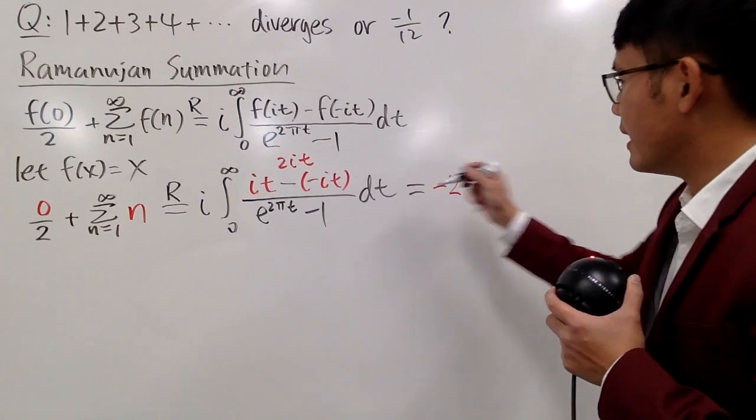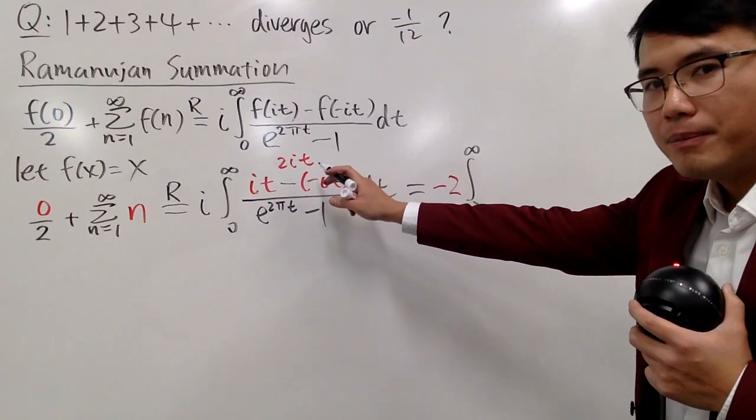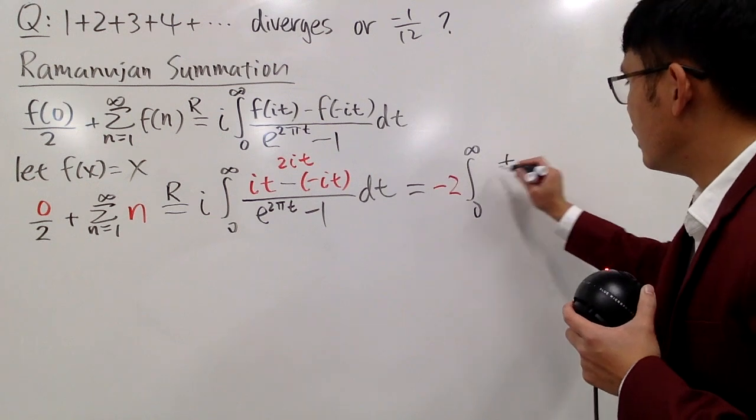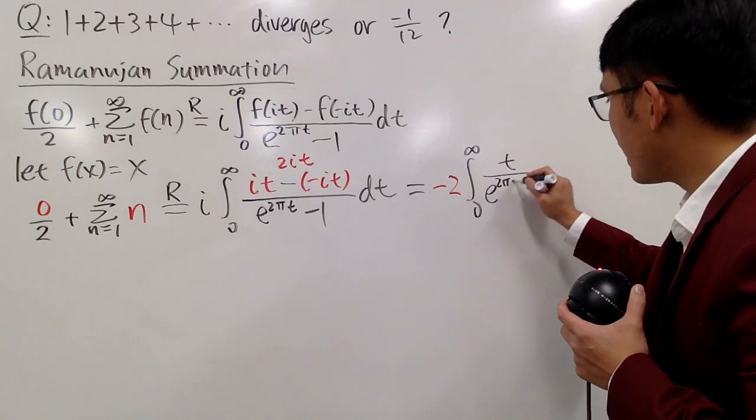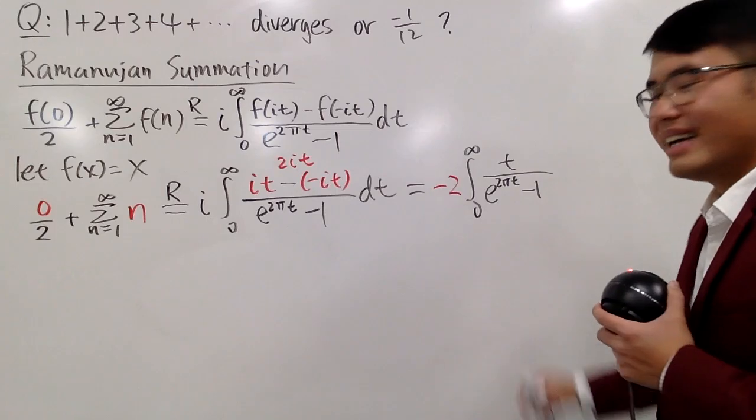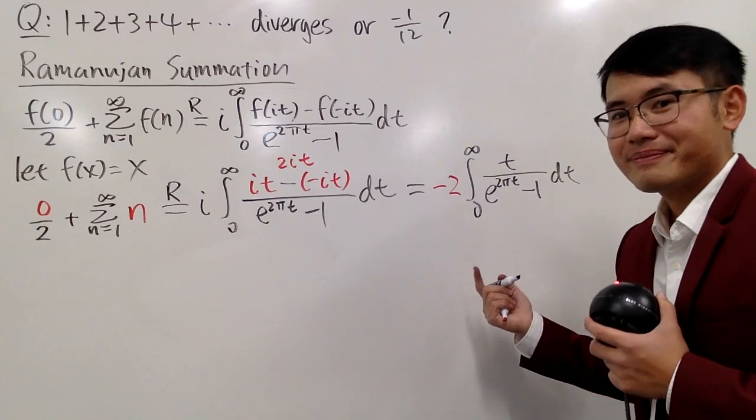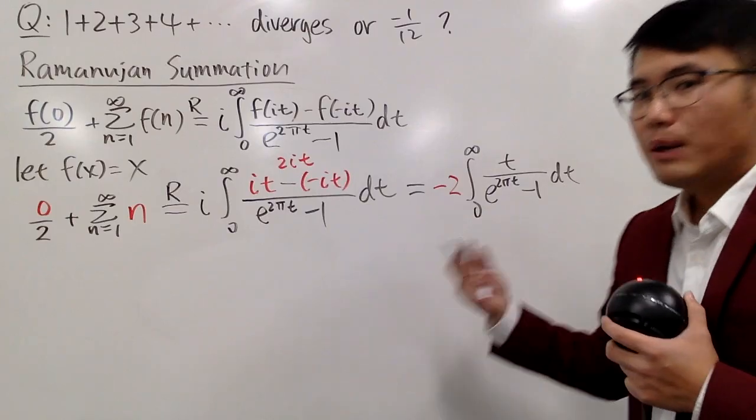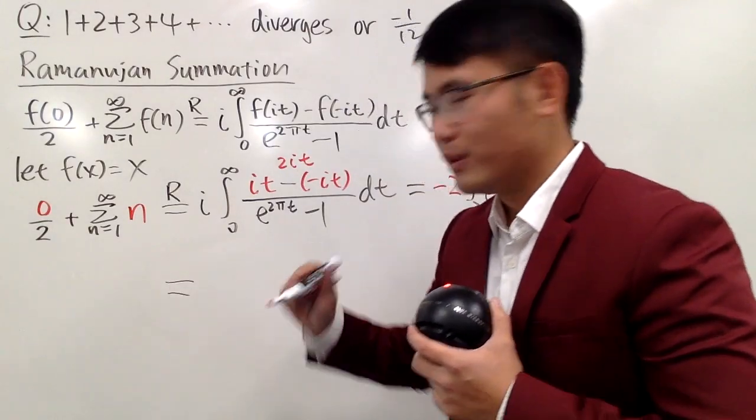And notice, I didn't put down the r here, because this part is equal to this part in the regular sense. I don't need the little r. Anyway, negative 2 times the integral from 0 to infinity, on the top now, I have the t over, on the bottom, we have e to the 2 pi t, minus 1. And I just have to figure out this integral now.